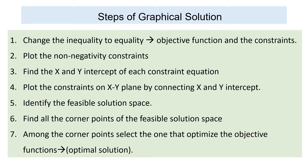The steps of the graphical solution are as follows. The first step is to change the inequality to equality — the constraints expressed with inequalities should be converted into equalities. The second step is to plot the non-negativity constraints, meaning all decision variables are greater than or equal to zero. The third step is to find the x and y intercepts of each constraint equation.